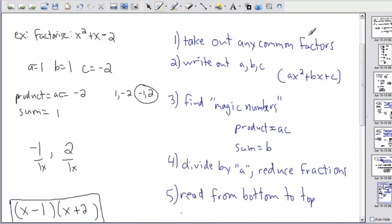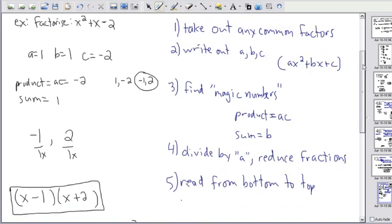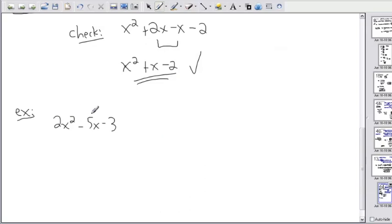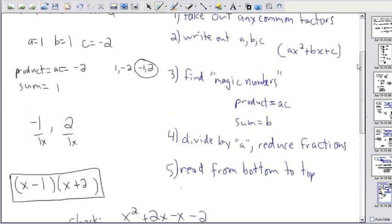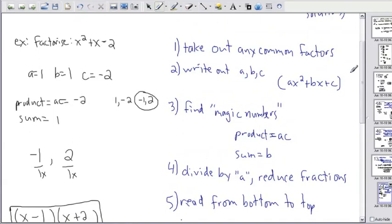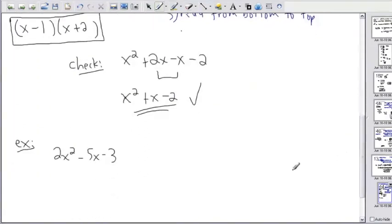So let's use these tricks again. First thing, take out any common factors. Are there common factors to all of these? Nope. The 2 here, the 5 here, the 3. I can't take out one number from all of them. So I'm done with step 1. Step 2 says to write out a, b, and c.